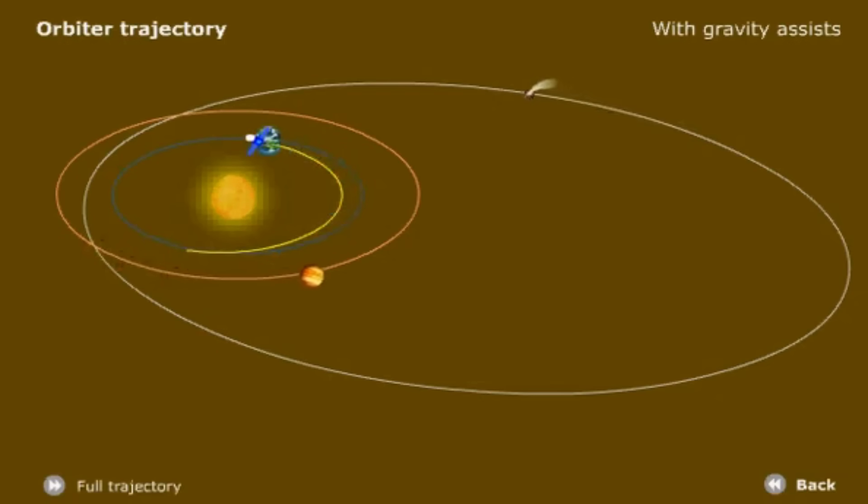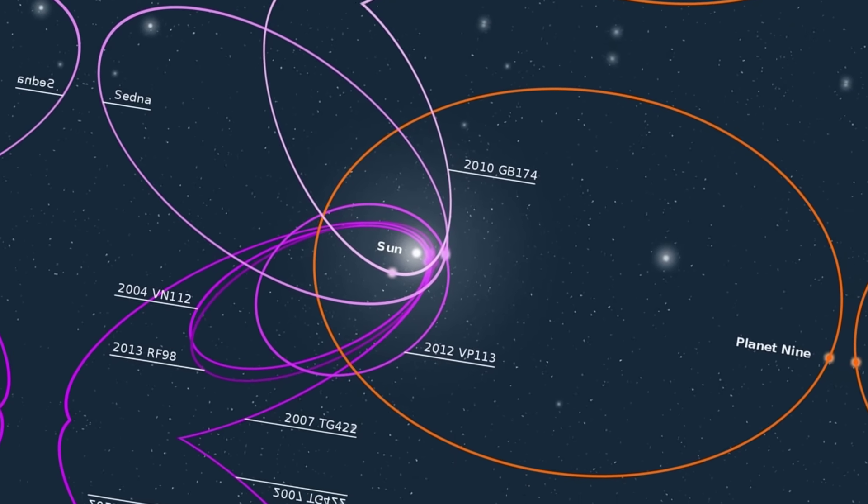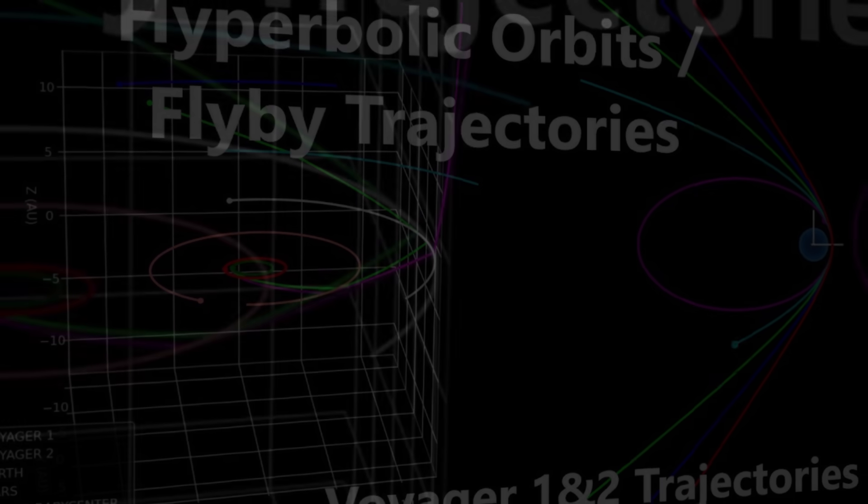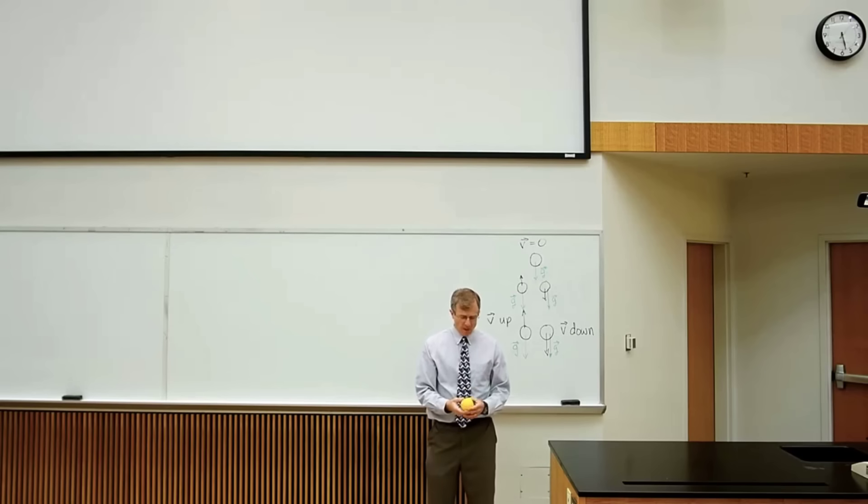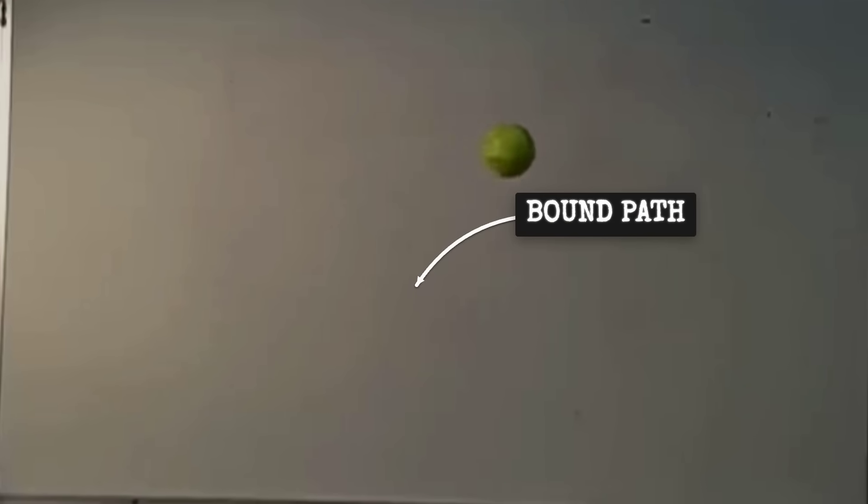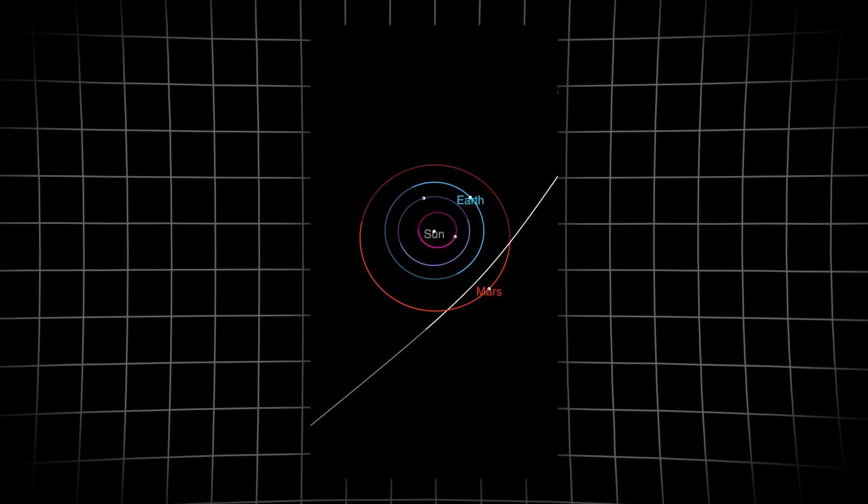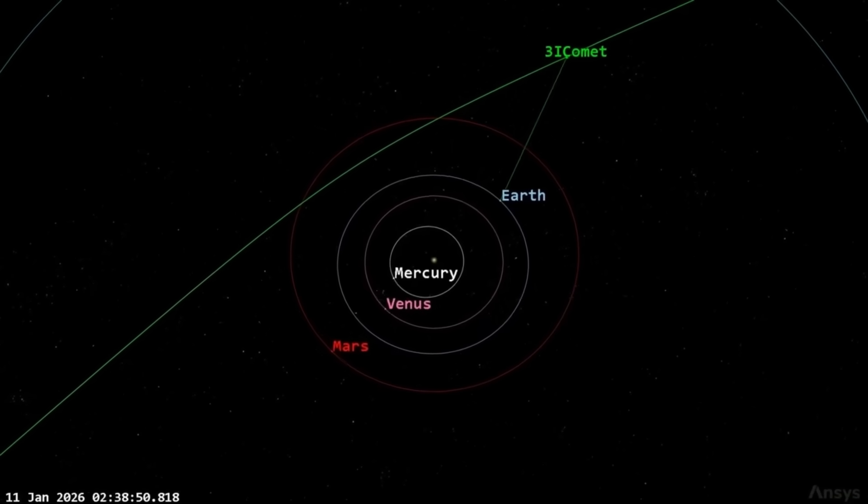Comets from our Oort cloud have eccentricities less than one, meaning they're on very elongated ellipses, but still bound to the sun. But when an object has an eccentricity greater than one, that's called a hyperbolic orbit. Think of it like throwing a ball straight up. If you don't throw it hard enough, it comes back down. But if you throw it faster than escape velocity, it keeps going forever. That's what we see with 3I/Atlas. Its orbital eccentricity is approximately 1.02 to 1.05, meaning it's on a hyperbolic trajectory.